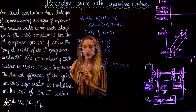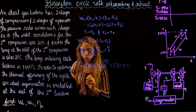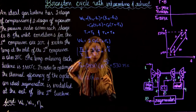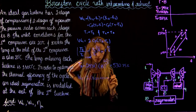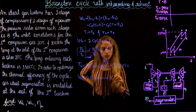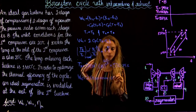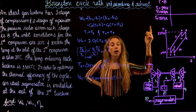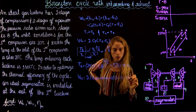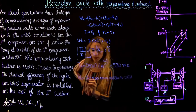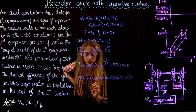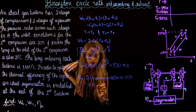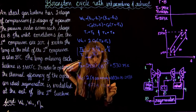Now we can go back to our compressor work equation. It's going to be 2 × 1.004 kJ/(kg·K) × (535 - 293) K, giving us a compressor work of 477.4 kJ/kg.